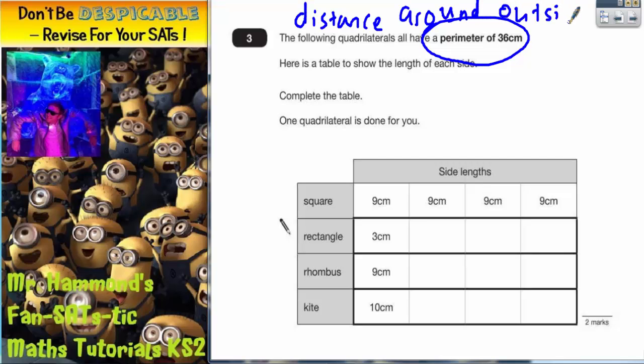It then says, here is a table to show the length of each side. Complete the table. One quadrilateral is done for you. So a square, if the perimeter is 36, has got 4 sides, so you're doing 36 divided by 4 equal sides, which is why each one is 9.